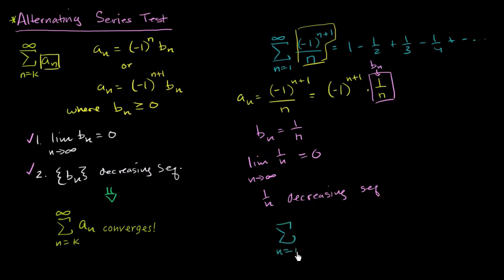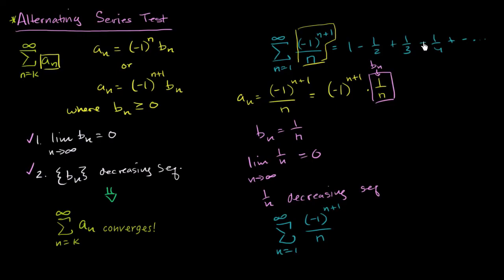So the series from n equals one to infinity of negative one to the n plus one over n converges. That's kind of interesting, because we've already seen that if all of these terms were positive, we just have the harmonic series, and that one didn't converge. But this one did — putting these negatives in does the trick. And actually we can prove this one converges using other techniques, in particular the limit comparison test.